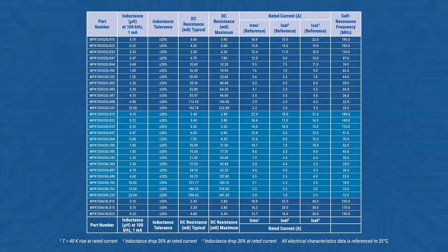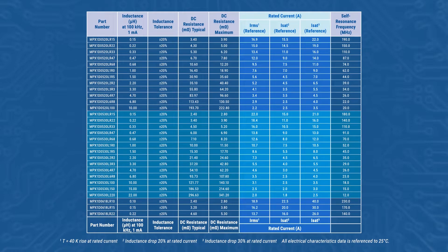When you're searching for an inductor, one of the first parameters you need to check, besides inductance, is the current rating. This table is from our METCOM MPX series datasheet, and here you can see that there are three current ratings. In this video, we're going to focus on the first one: the RMS current rating.